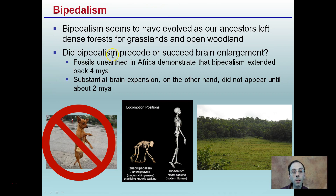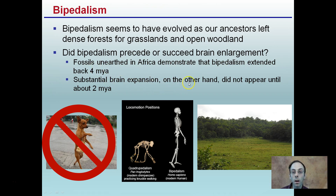The question is: did bipedalism precede or follow brain enlargement — which came first? Fossils unearthed in Africa demonstrate that bipedalism extended back four million years ago. Substantial brain expansion, on the other hand, did not appear until two million years ago. This evidence suggests that bipedalism occurred before brain expansion.